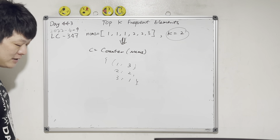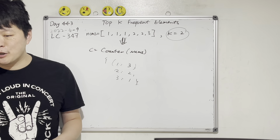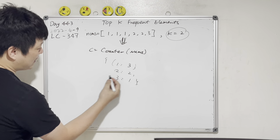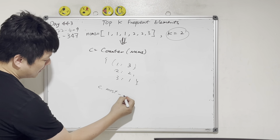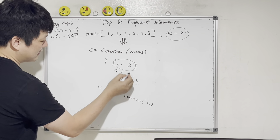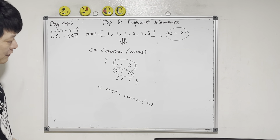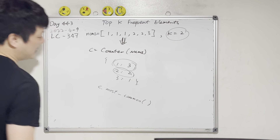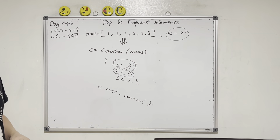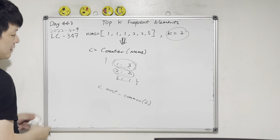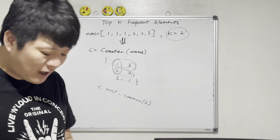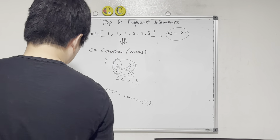The very interesting thing about Counter is that it provides a method called most_common(). So if we do c.most_common(2), it will give us the two most common items. If we don't give any parameter it returns everything in order. So we give most_common(2) and then we need to return those values.